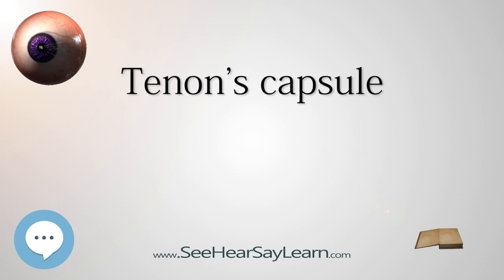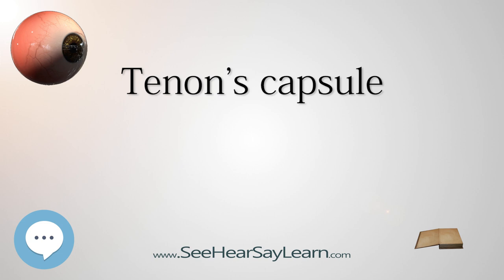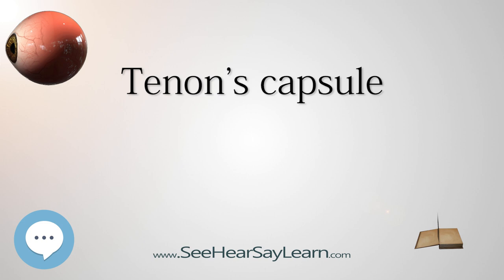The sheaths on the recti are gradually lost in the perimysium, but they give off important expansions. The expansion from the rectus superior blends with the tendon of the levator palpebrae, and that of the rectus inferior is attached to the inferior tarsus. The expansions from the sheaths of the recti lateralis and medialis are strong, especially that from the latter muscle, and are attached to the zygomatic bone and lacrimal bone respectively. As they probably check the actions of these two recti, they have been named the medial and lateral check ligaments.